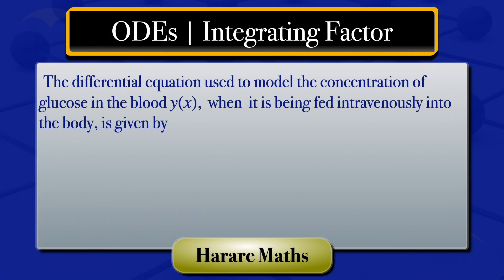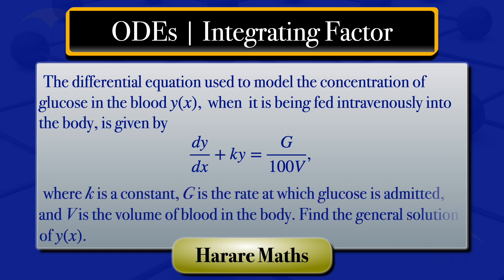The differential equation used to model the concentration of glucose in the blood, denoted by y of x, when it is being fed intravenously into the body is given by: the derivative of y with respect to x plus k multiplied by y equals g divided by 100 phi. Here k is a constant, g is the rate at which glucose is admitted, and phi is the volume of blood in the body — so g and phi are constants as well. In this video, we will find the general solution of the given ODE, finding y of x.